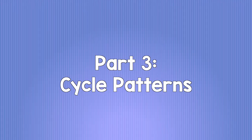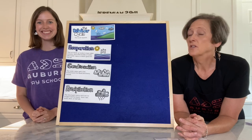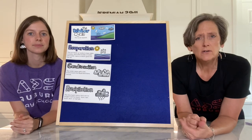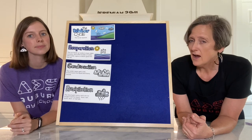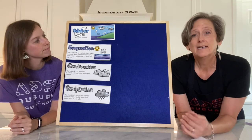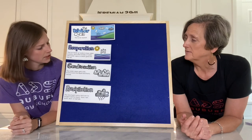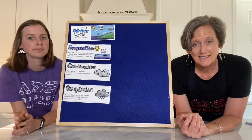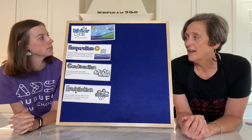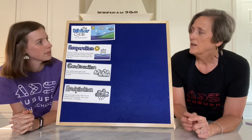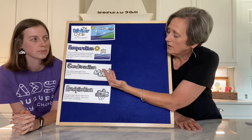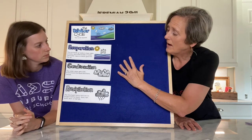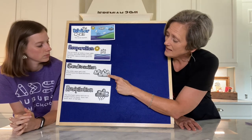Part 3: Cycle Patterns. Some patterns are really easy to see, like symmetry and spirals — when you look at them you can tell right away it's a pattern. But some patterns are not as easy to notice, like the water cycle. The water cycle is a pattern because patterns repeat, and the water cycle goes on and on and on — it repeats.